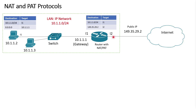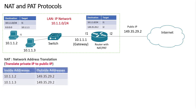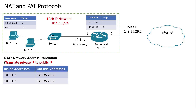In this local area network, if a host wants to send a request to the internet, the router will apply two protocols: the NAT protocol and the PAT protocol. The NAT protocol stands for Network Address Translation. The goal of this protocol is to translate the private IP to a public IP. This is the routing table that the router will generate to translate the two private IPs to this public IP to reach the internet.